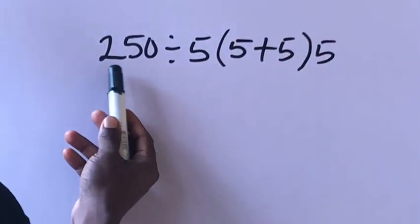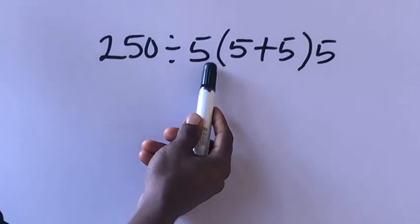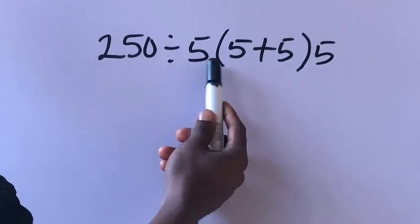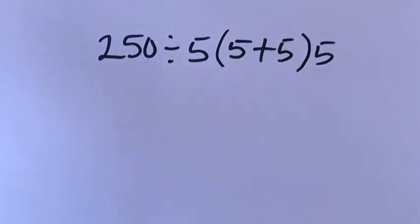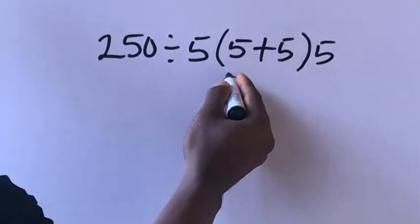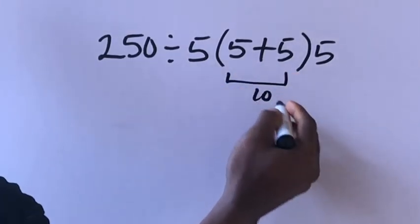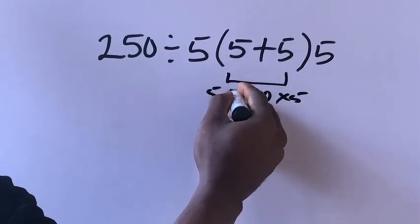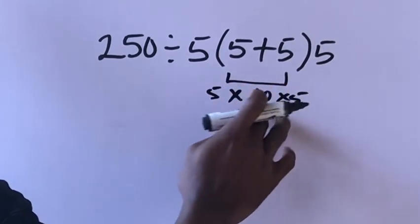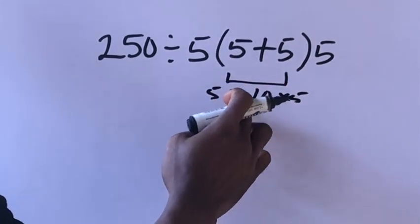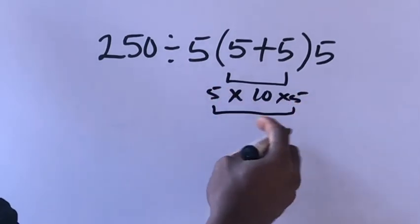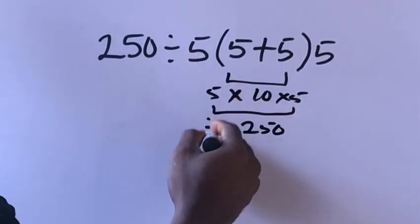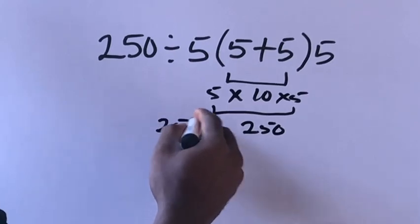Now 250 divided by 5 times 5 plus 5 times 5. This times this will give us 10, 10 times 5 times 5 equals what? This will give us 250, 250 divided by this 250 here.